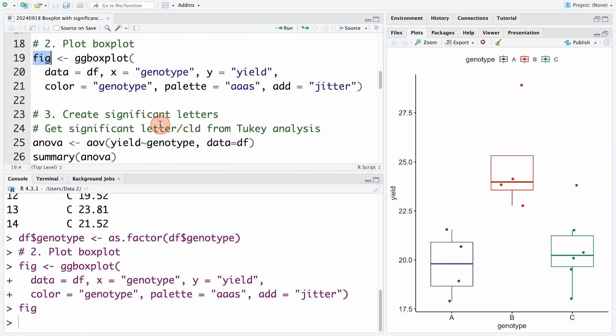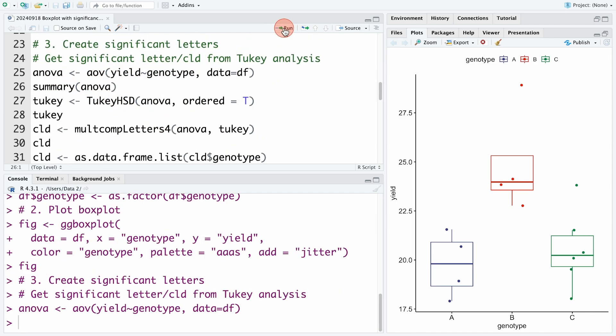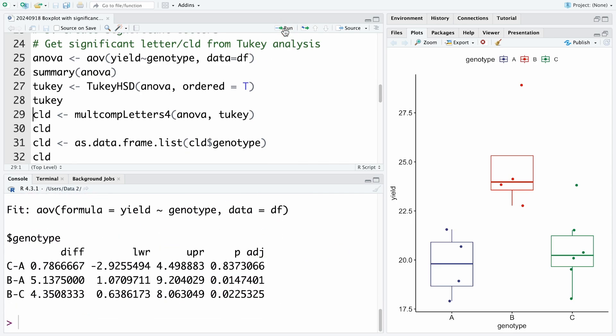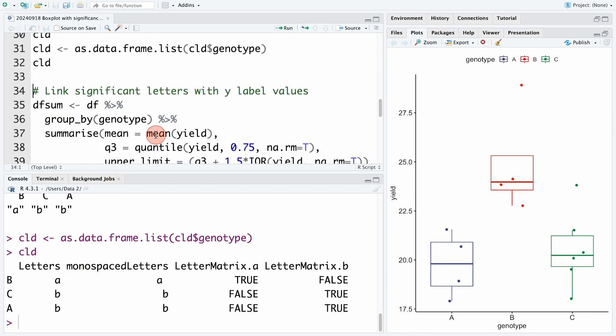Next step, we create a compact letter showing significant differences. We perform ANOVA analysis of yield by genotype and then perform a post hoc test to get compact letters for significant differences. These are the compact letters for significance. They are arranged from the largest to the smallest.